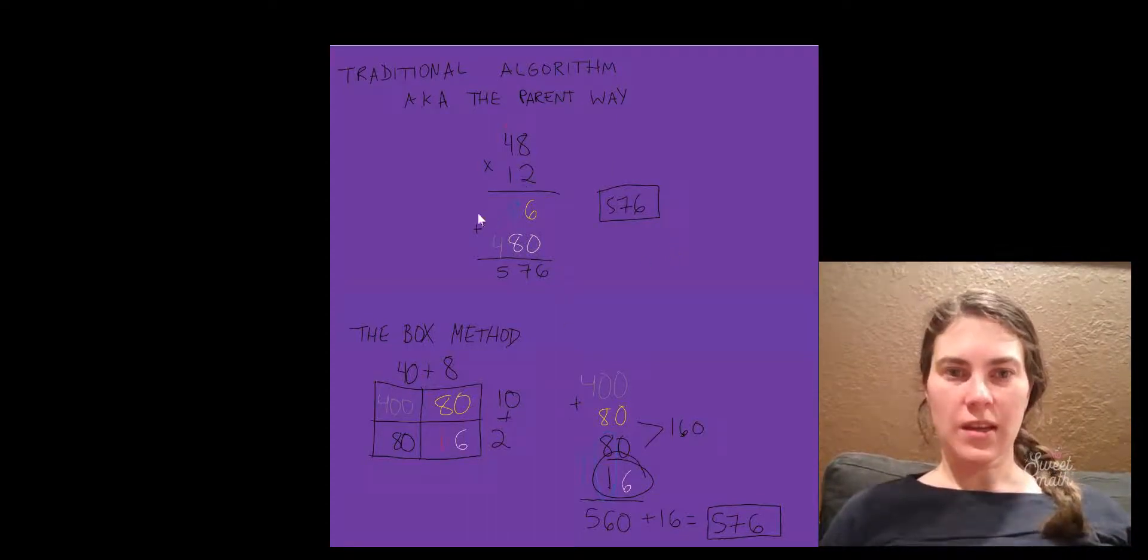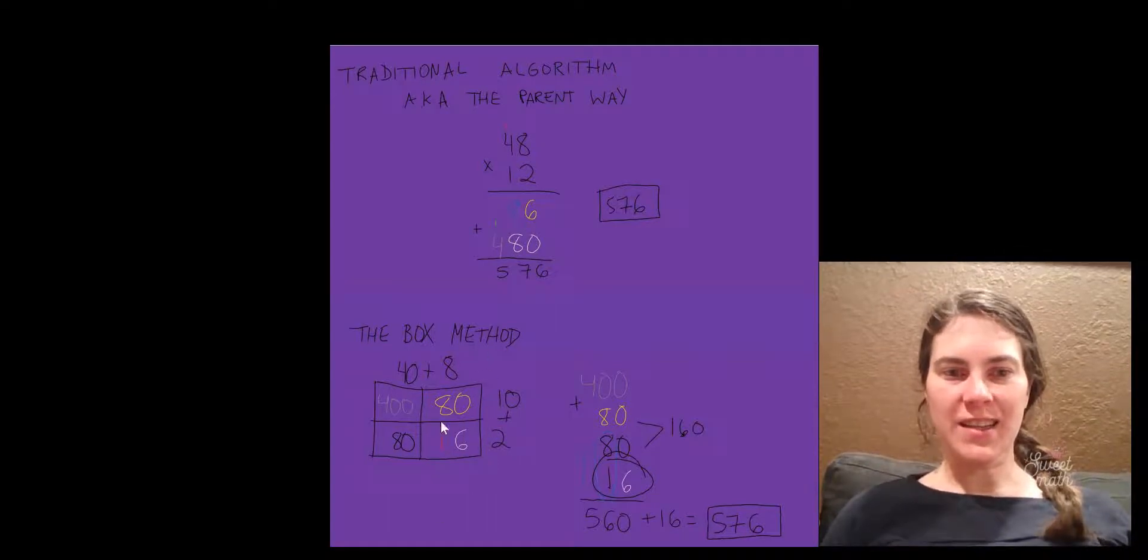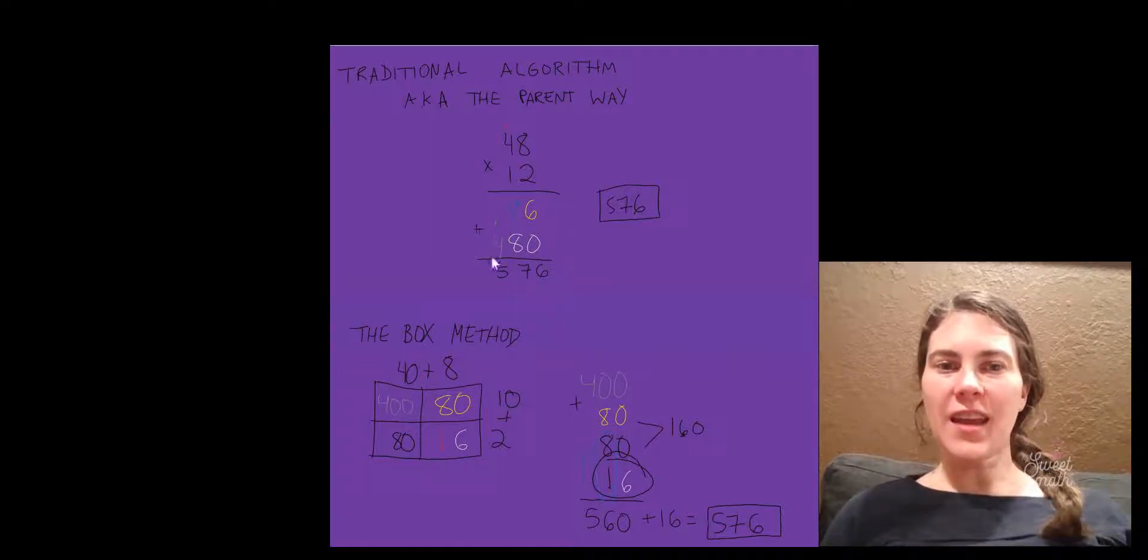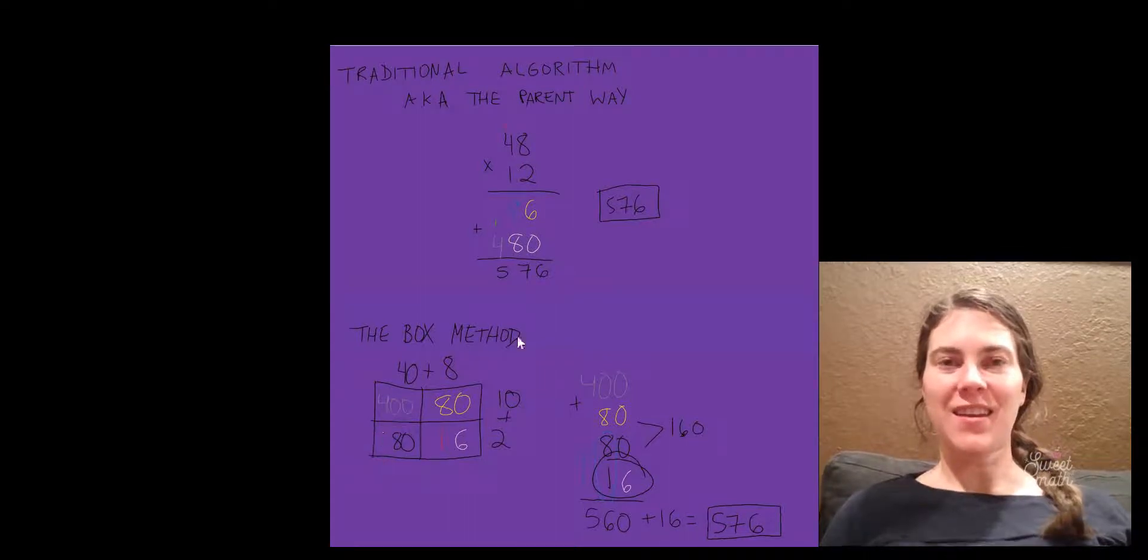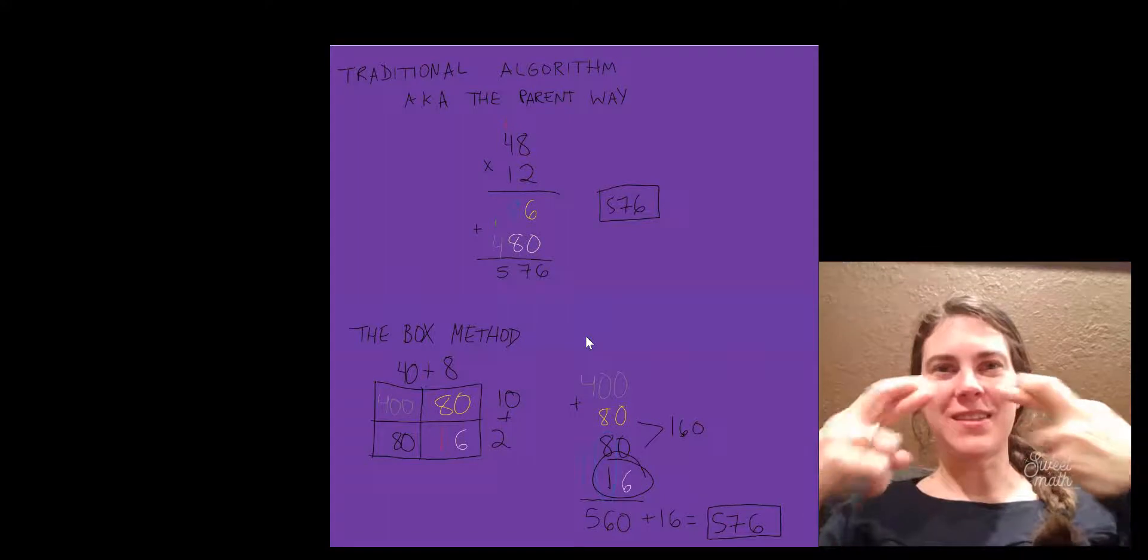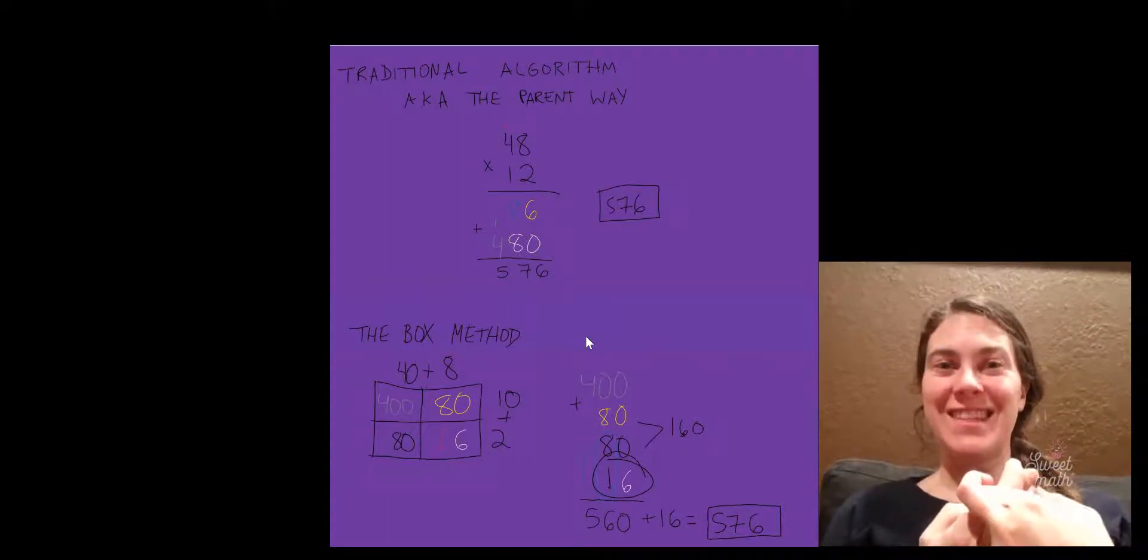Look at this. What's the 4 pieces of the box method? 80 plus 16 is 96. 480? 400 plus 80 is 480. And that is how they took the 4 pieces, they spun it into 2 pieces, then you wrap it back together, and it makes 576.